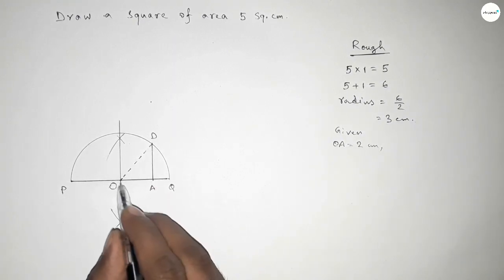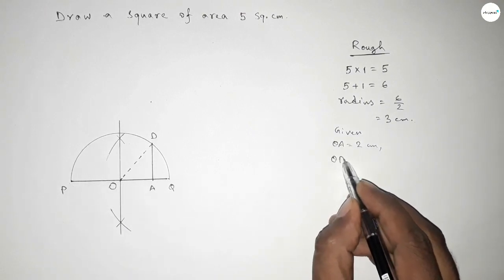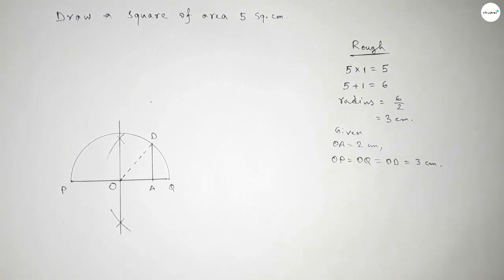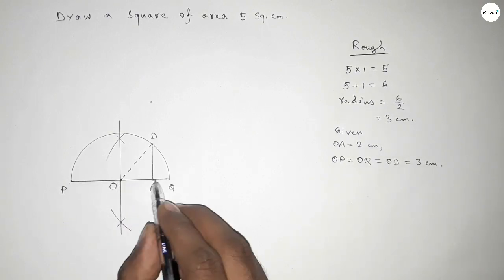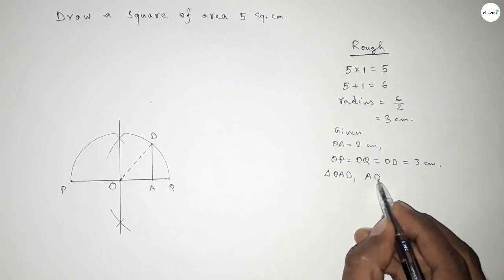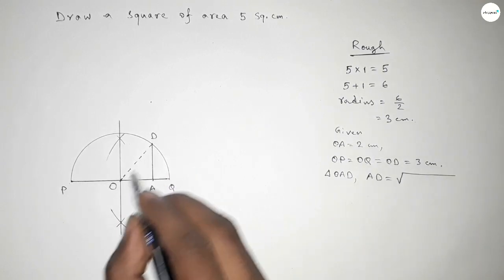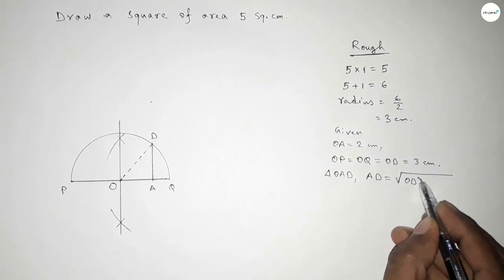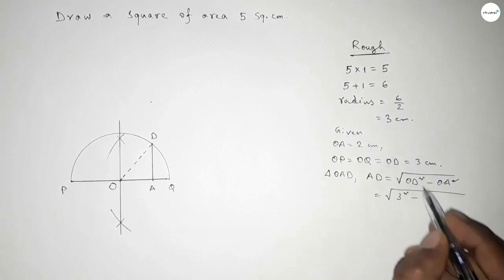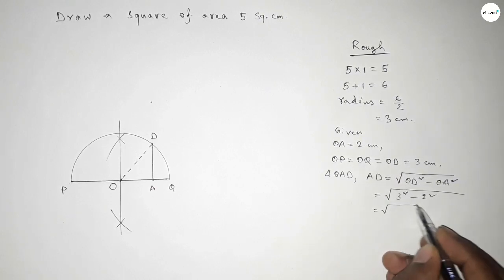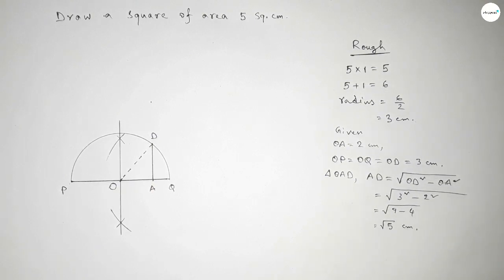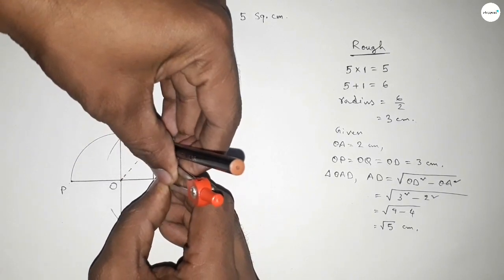Radius OP, OQ, and OD equal to 3 centimeters. Now from right angle triangle OAD, we can write: perpendicular AD equal to root over hypotenuse squared minus base squared, so OD squared minus OA squared. Putting the values: 3 squared minus 2 squared equals 9 minus 4. So AD equals root 5 centimeters.